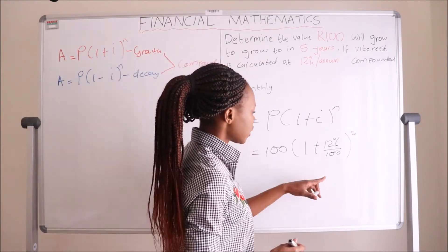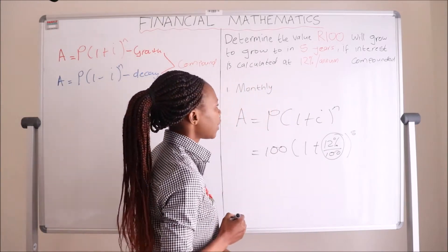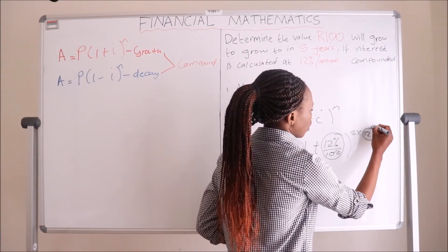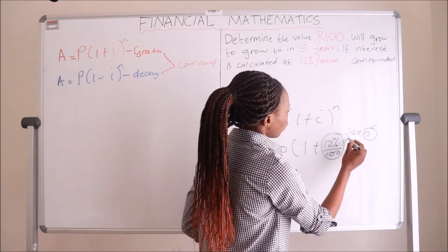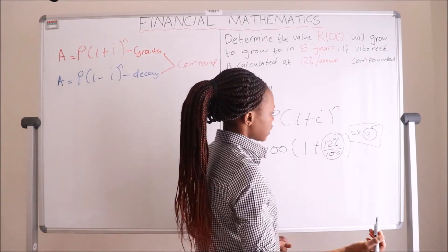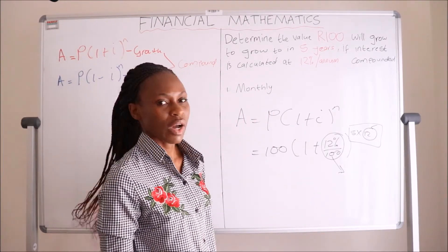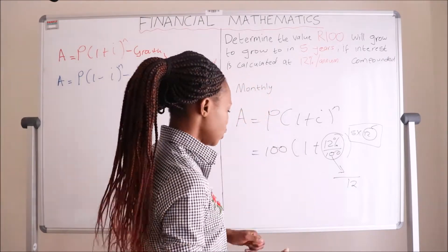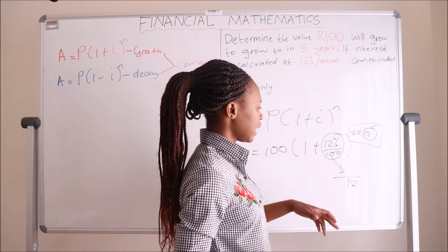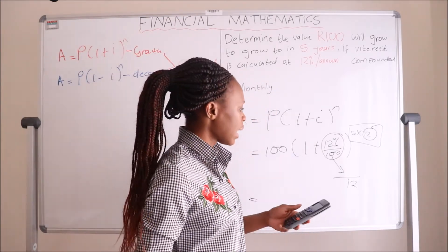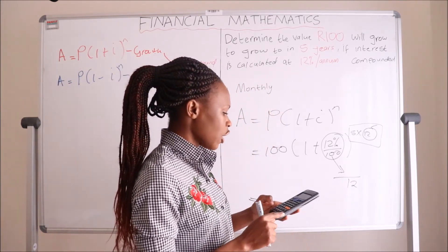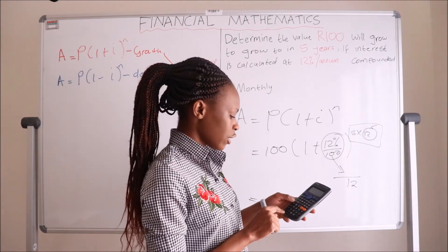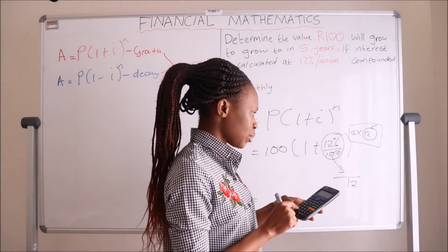Now that they say it's compounded monthly, we must consider the 12 months per annum in both the interest rate and the period. The period becomes 5 times 12, because 12 is the number of months in a year — so 100 rand will be compounded 60 times over five years. For the interest rate, we have 12 over 100, but we also divide by 12 to show it's compounded 12 times in a year. So 12 divided by 100 gives 0.12, then divide by 12 gives 0.01.